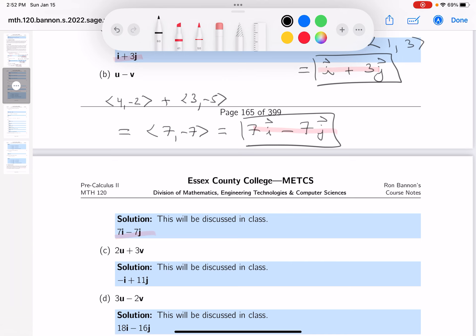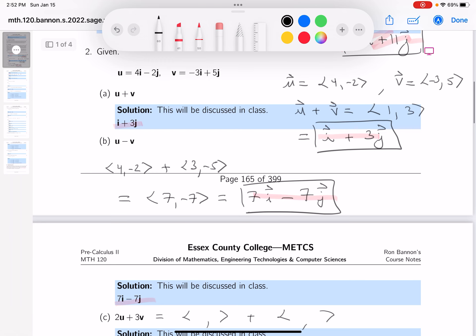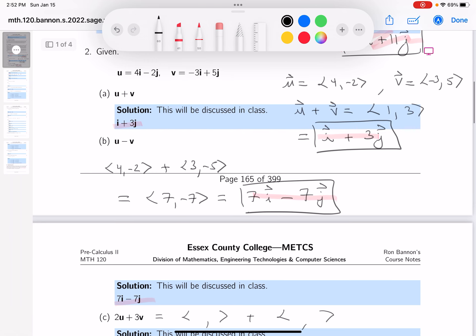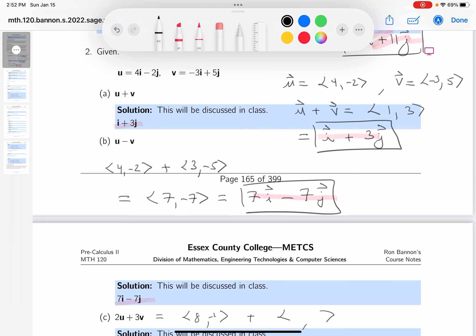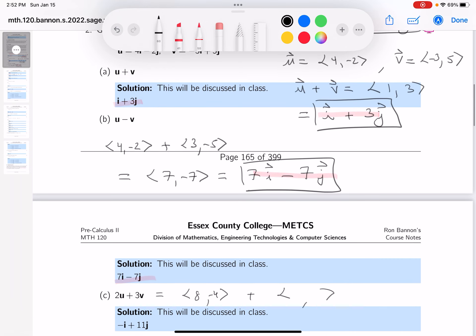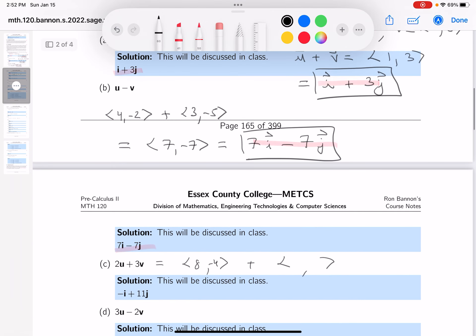Let's do the next one. It's going to be a scalar multiple of u, twice u plus 3 times v. Let's write that down. We're not trying to memorize things, but twice u would be 8, -4.